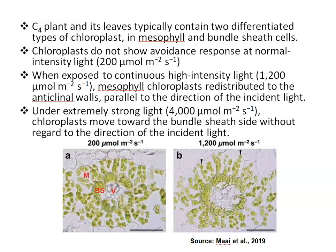C4 plants and their leaves typically contain two differentiated types of chloroplasts in mesophyll cells and in bundle sheath cells. Chloroplasts do not show avoidance response at normal intensity of light — approximately 200 micromole per second per square meter. Under normal light intensity, chloroplasts show a normal distribution. But when exposed to continuous high intensity of light — 1200 micromole per second per square meter — only mesophyll chloroplasts redistribute to anticlinal walls, parallel to the direction of incident light, as seen in the second diagram.